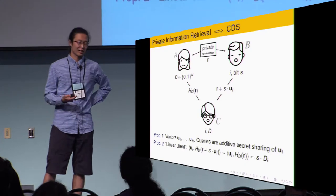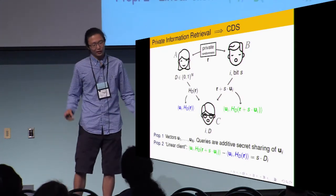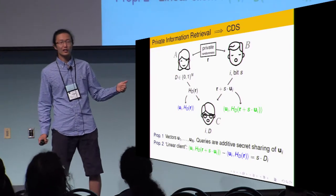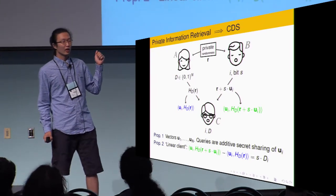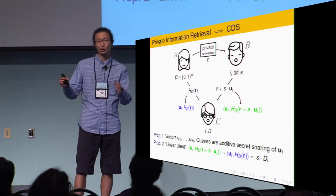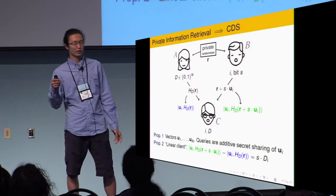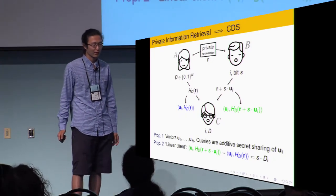Let's check the CDS schemes already. Is it correct? It is. From Alice's message, you can compute the blue inner product. From Bob's message, you can compute the green inner product. Subtract them, get S times D_i, which is what Charlie should learn.